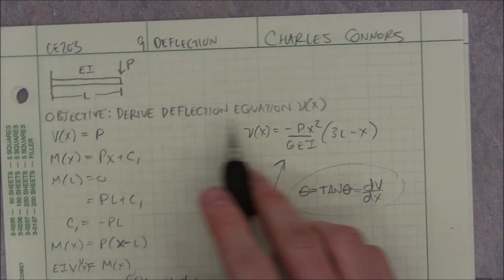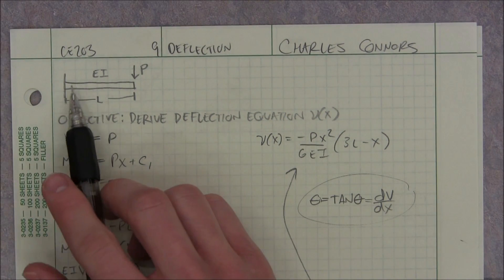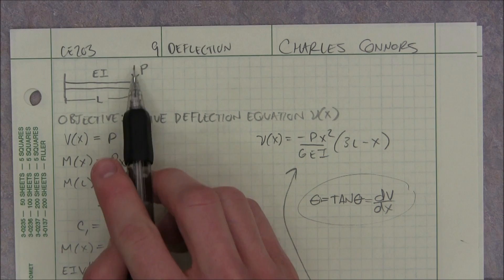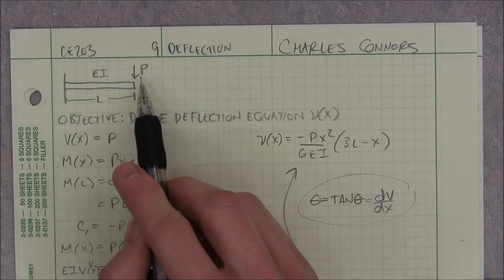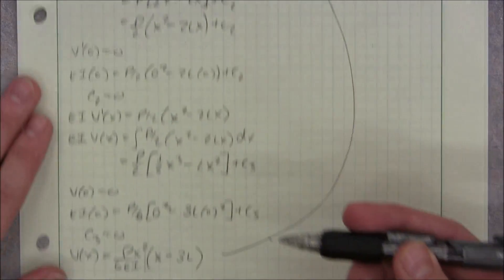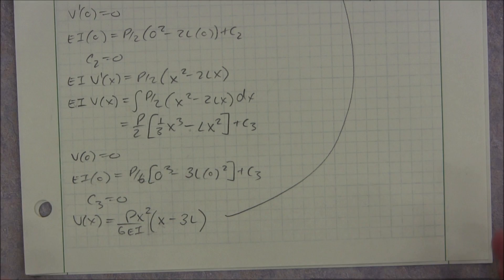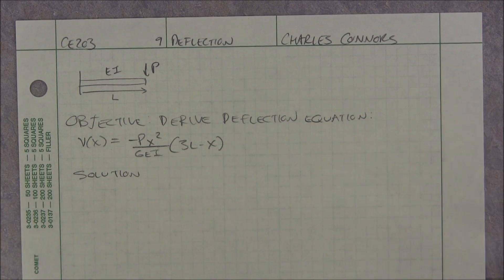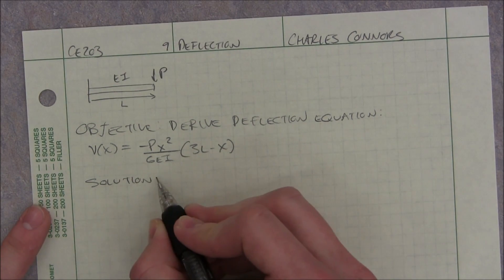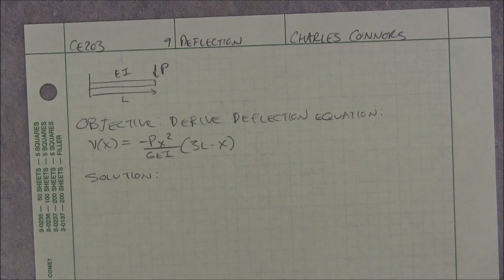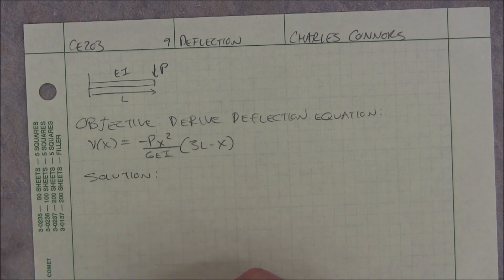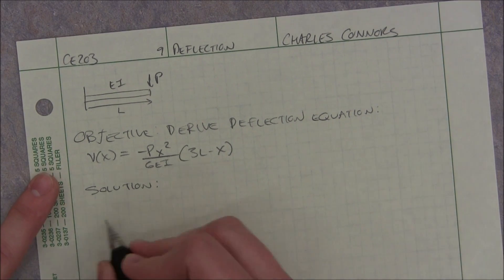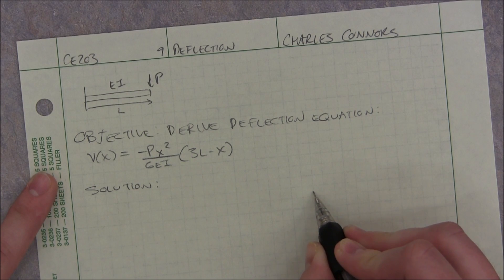Anyway, we're going to derive a special case where it's a cantilever and we have our load of P directly at the end. So I got this particular one from the back of the book and we're just going to derive it. Let's go for it. The first thing I start with is I try to find my equation for moment and I'll do that by using a free body diagram.